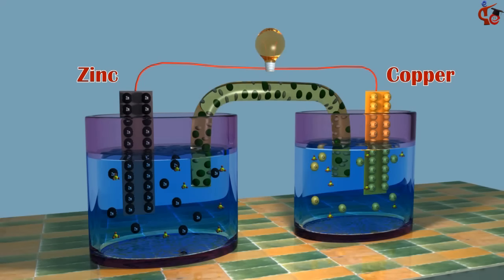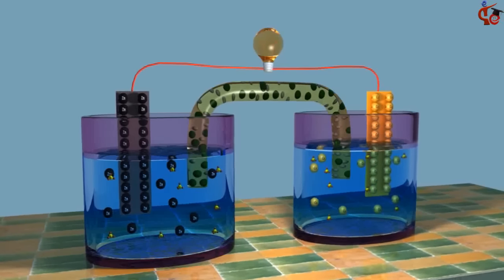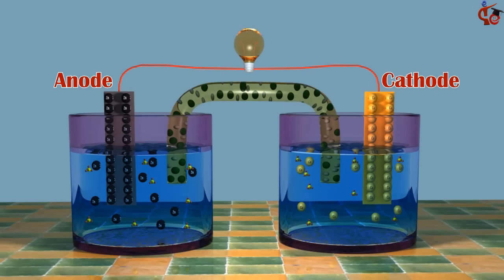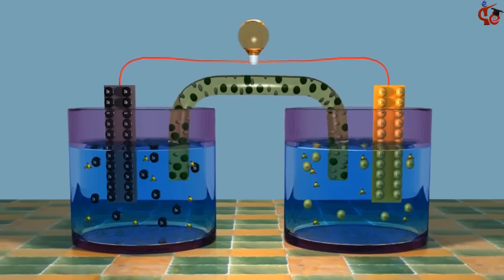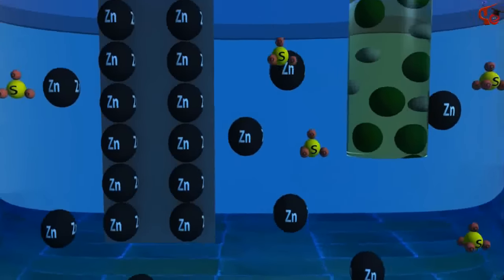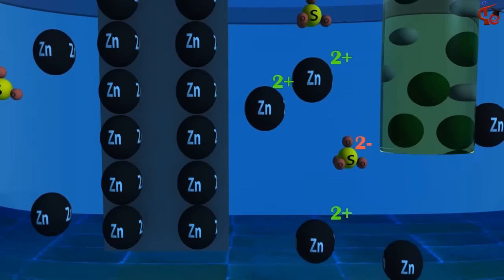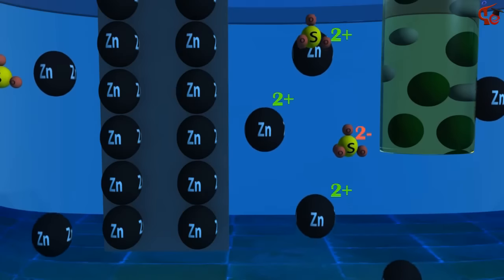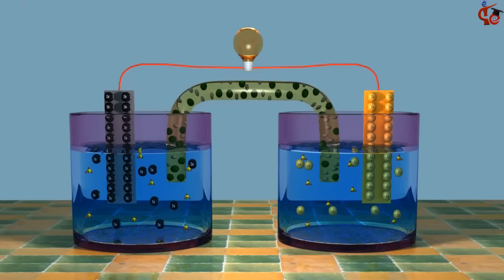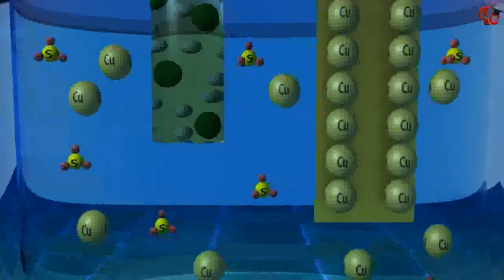A useful galvanic cell can be constructed by using zinc and copper. The anode is a zinc bar placed into a zinc sulfate solution, and the cathode is a copper bar placed into a copper 2 sulfate solution.